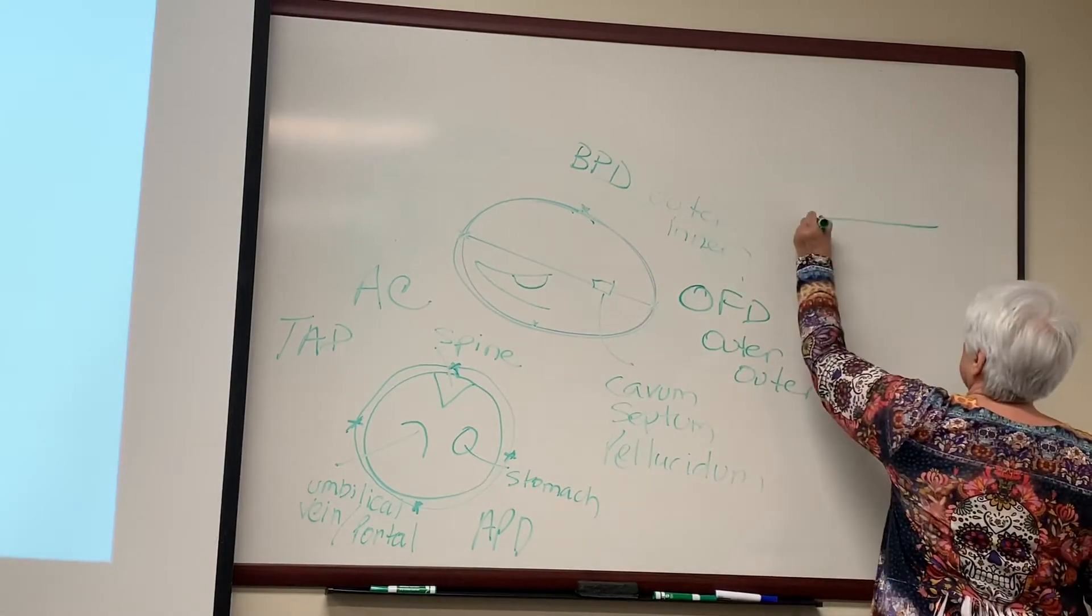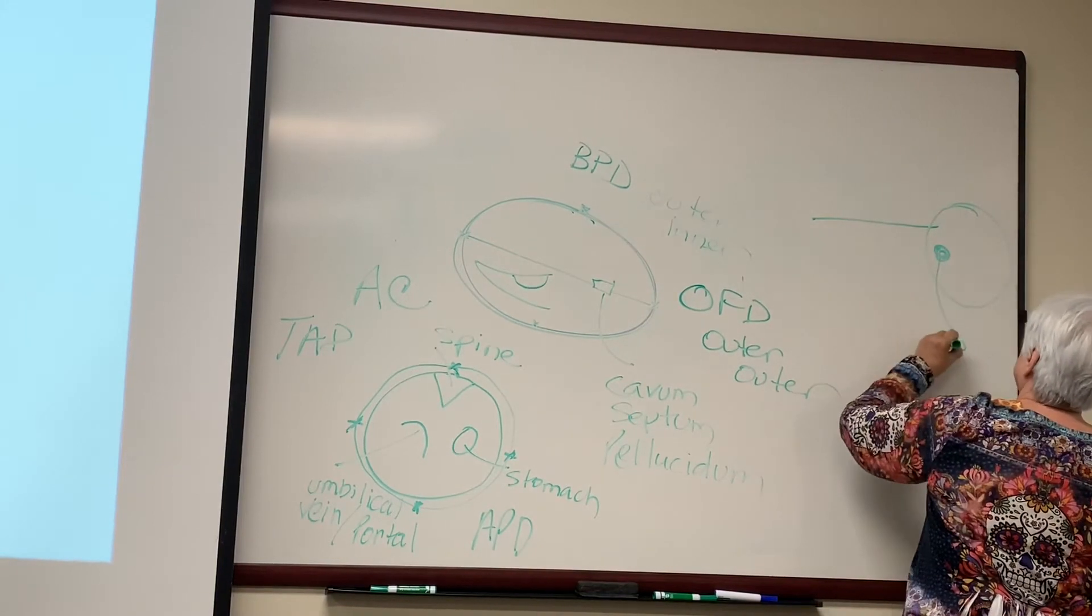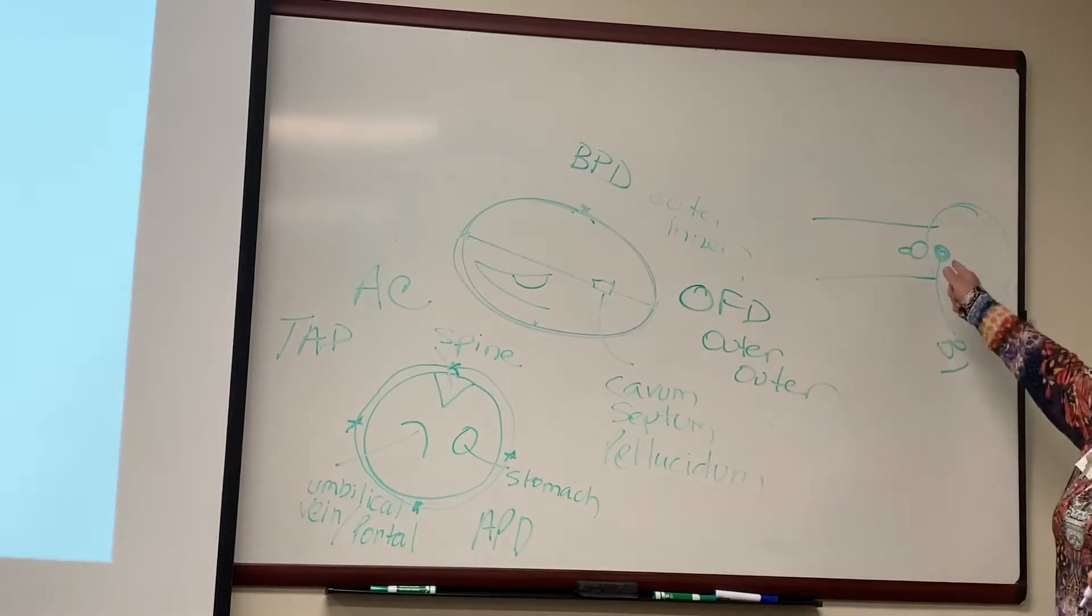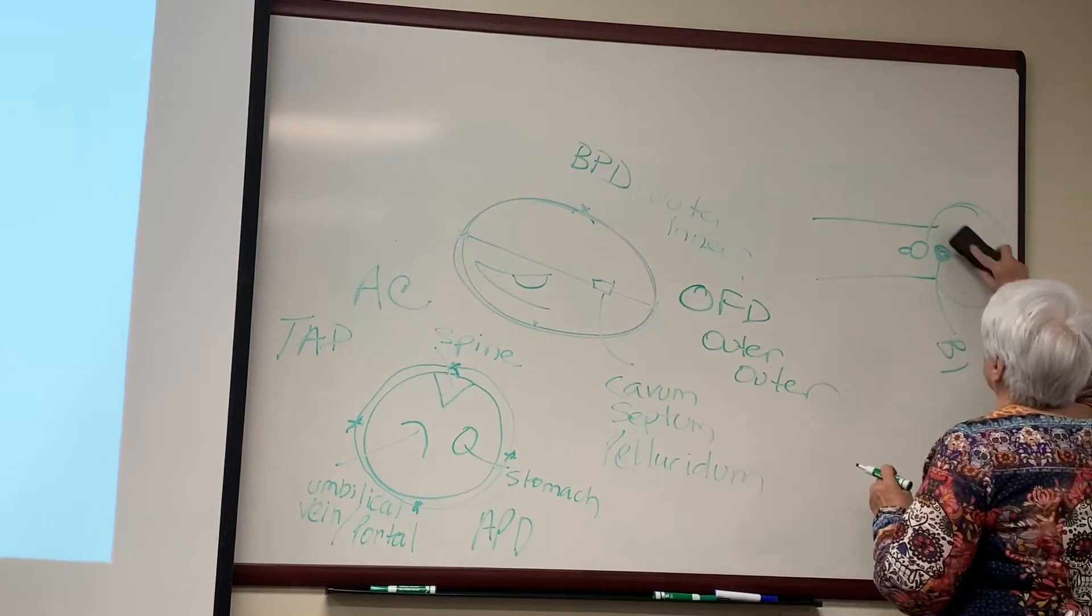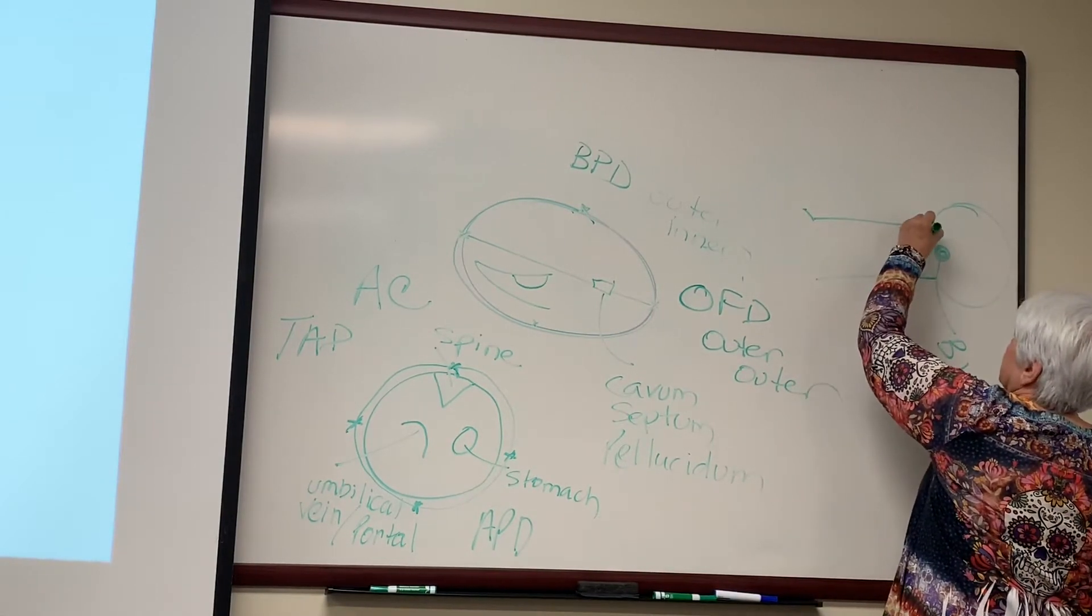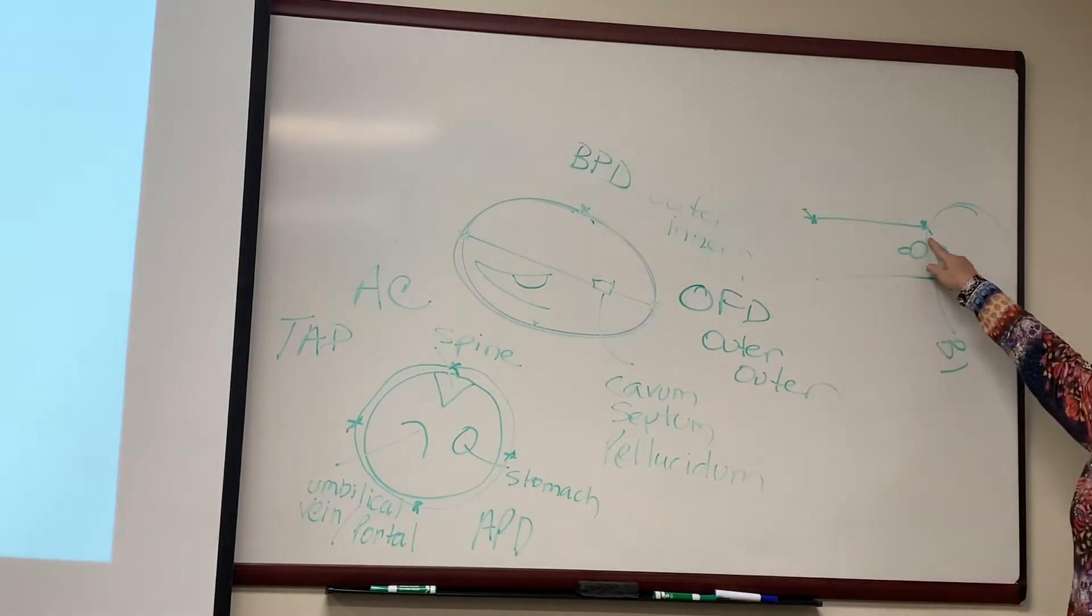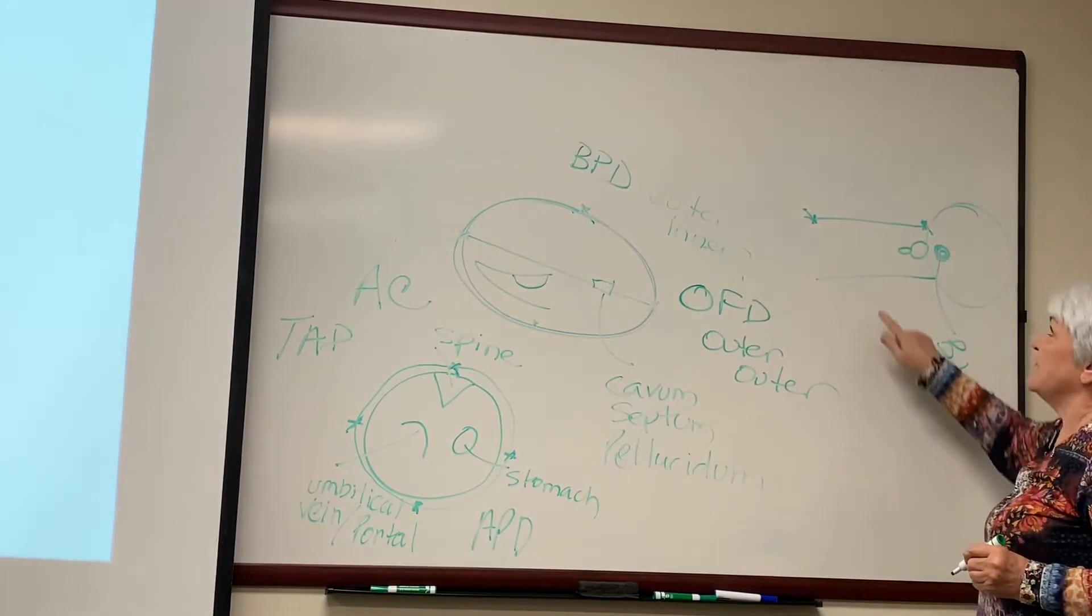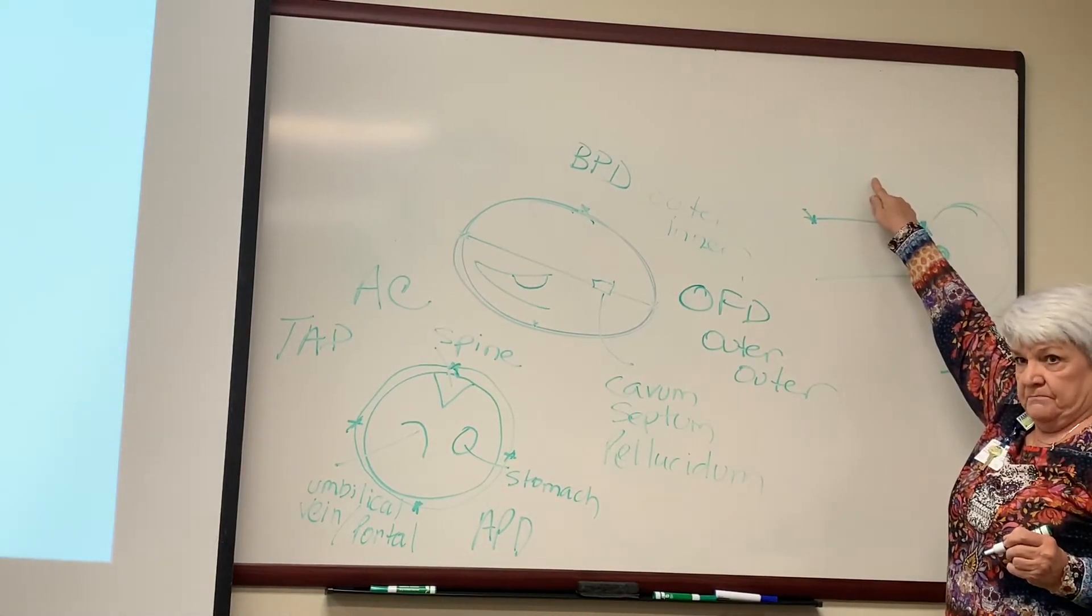The last measurement. So here's my baby's bladder. Here's my little turtle sign. It's a boy. Now what I'm going to do here is I am going to measure here to here. I'm not going to measure those two little ossifications. I'm just going to measure the shaft. The shaft closer to the transducer.